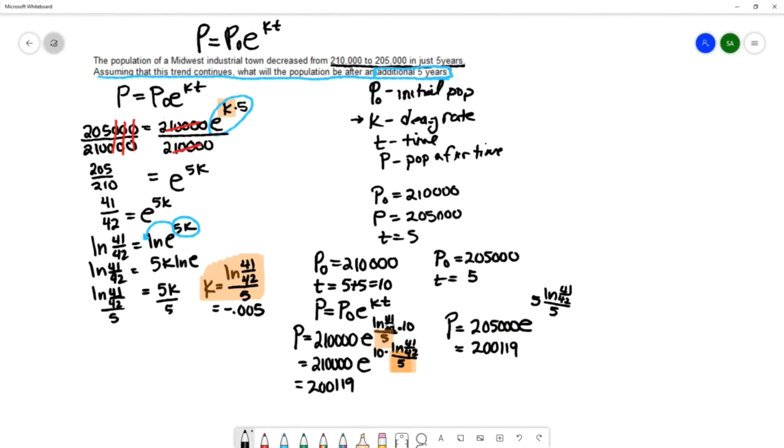So for this example, if the trend continues, the population will reach 200,119 with an additional 5 years.